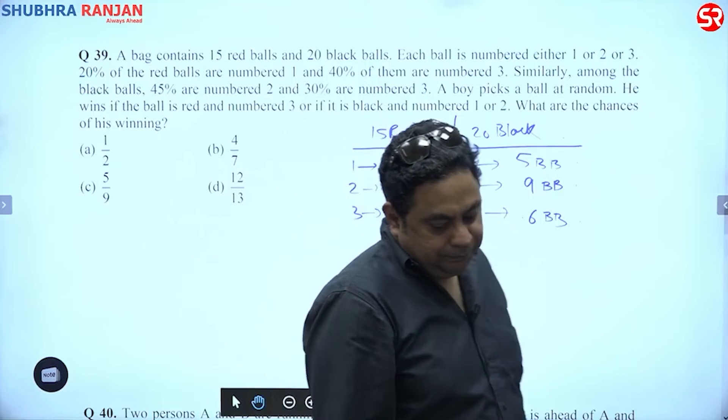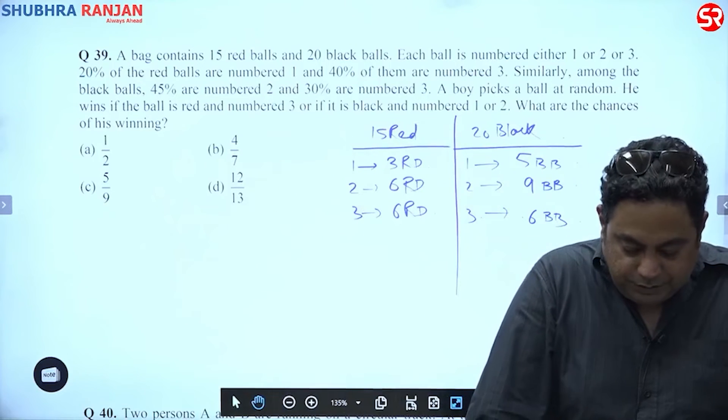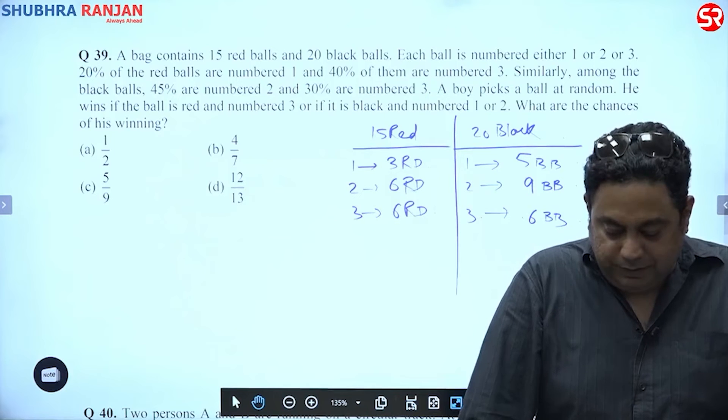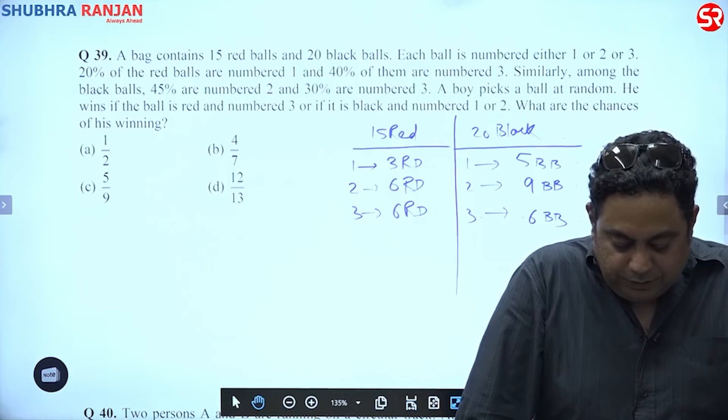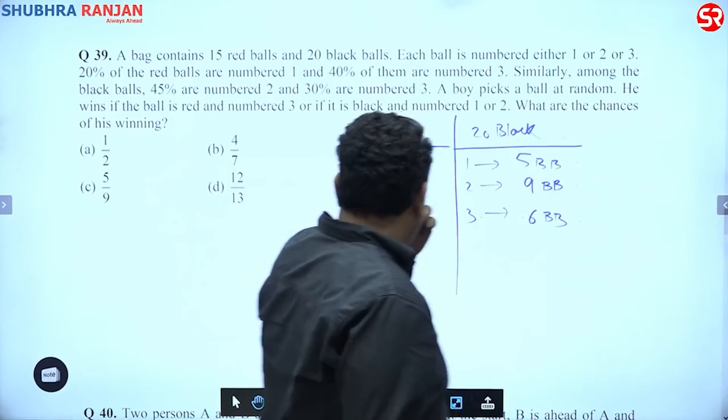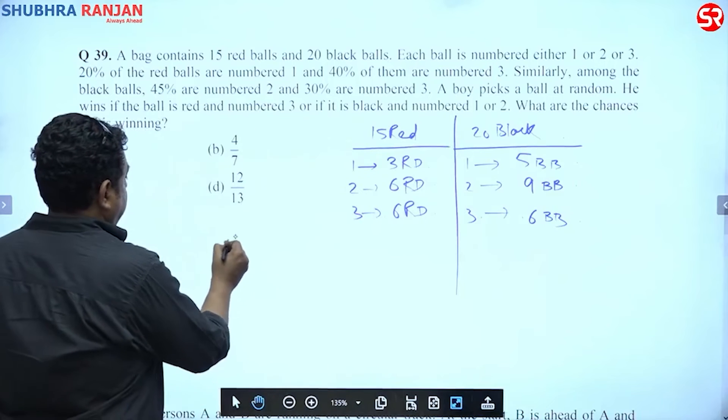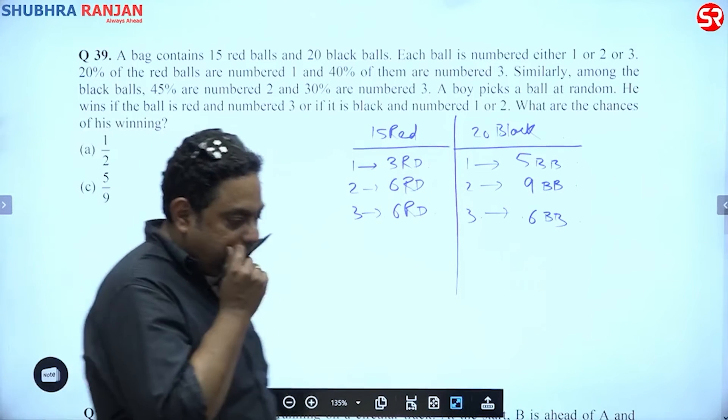Now question to you is: he says a boy picks up a ball at random. He wins if the ball is red and number 3, so red and number 3 is 6 balls, right? And second, he